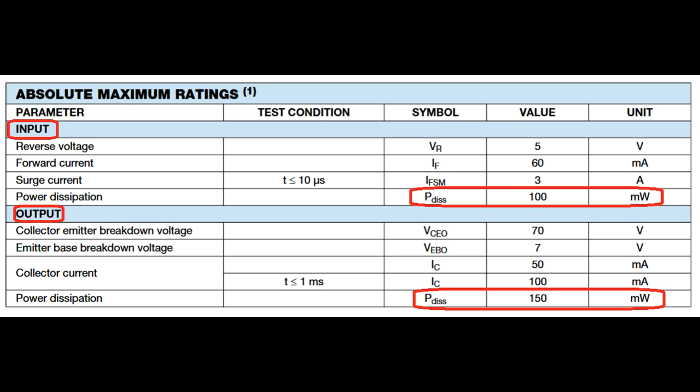Actually taking a look at the datasheet for the 4N25 part that we're using shows that they have a separate input and output power dissipation maximum. The input power maximum they rated at 100 milliwatts and the output at 150 milliwatts. So at our input voltage of about 1.2 to 1.5 volts and 40 milliamps we're about half the power dissipation so we're well within the thermal design point of the part.